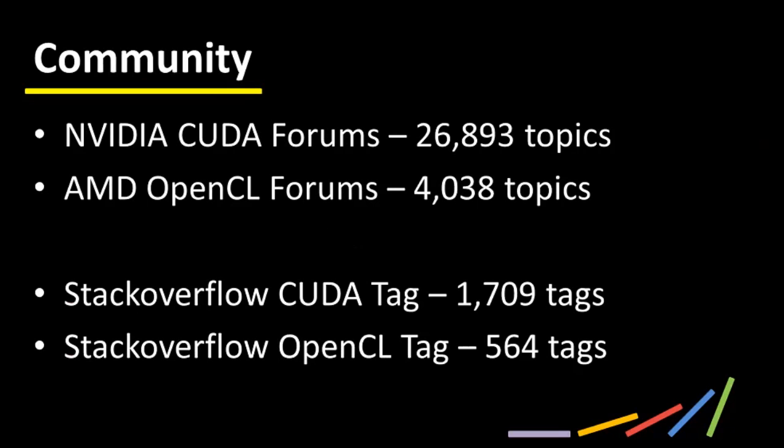The fourth feature is community, encompassing support, longevity, and commitment. As these things are hard to measure, we've put together a proxy. NVIDIA's CUDA forums have nearly 27,000 topics while AMD's OpenCL forums have 4,000. On Stack Overflow — a neutral third-party site — the number of CUDA tags is over three times the number of OpenCL tags. There are many more people doing CUDA programming today due to the great investment NVIDIA has put into building the GPU computing ecosystem.